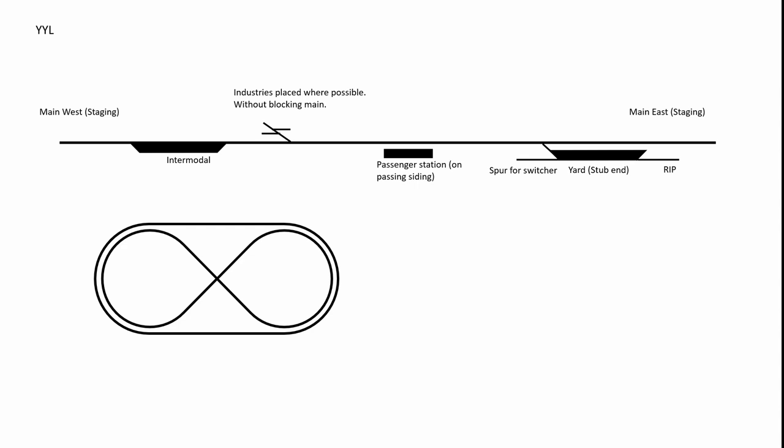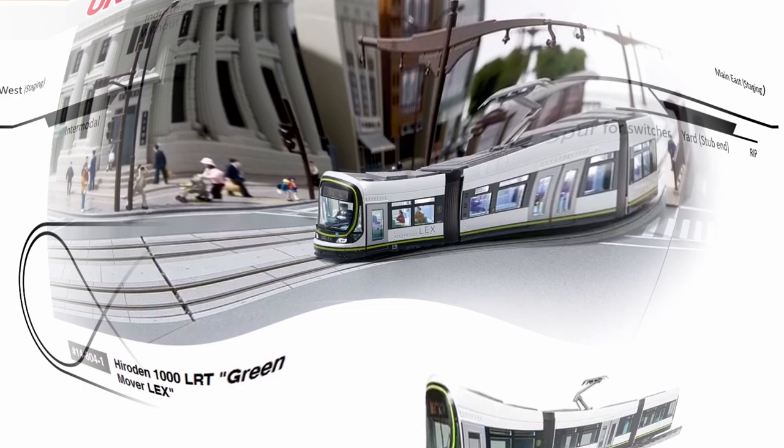That schematic gives an insane amount of operational options, which you'll see later. Then on the top I put in everything requested on a single line diagram: intermodal, a yard, some industries with switching, a passenger station if it would fit, and a yard with some switching. Not a lot of items, but there's also not a lot of space.